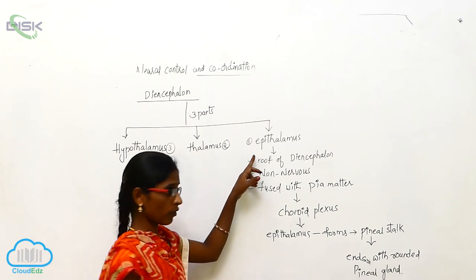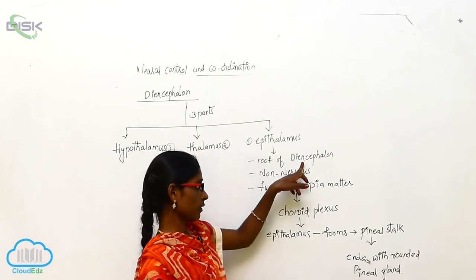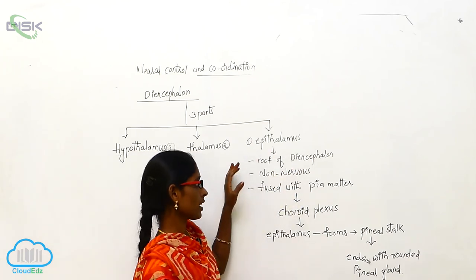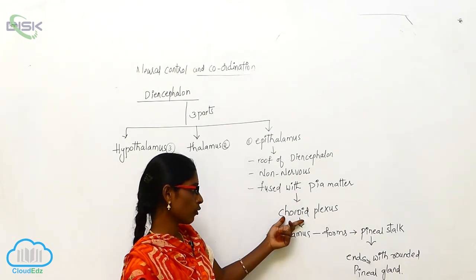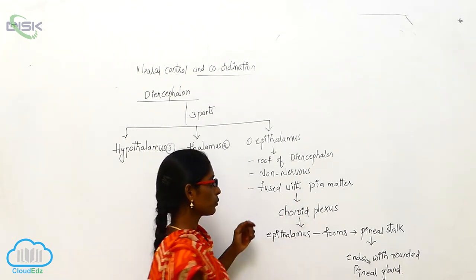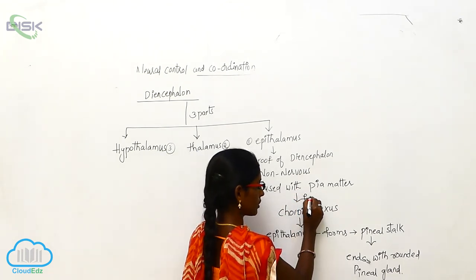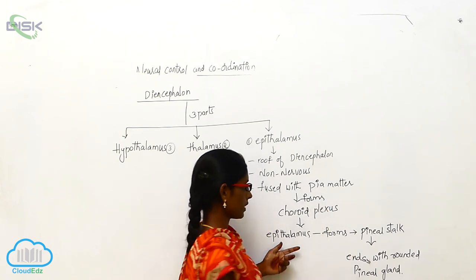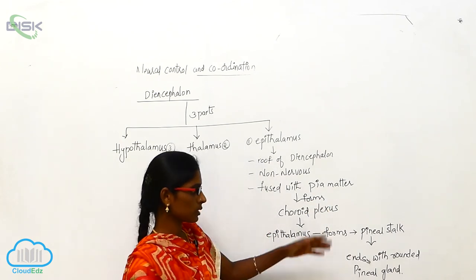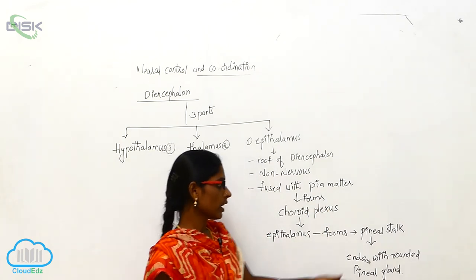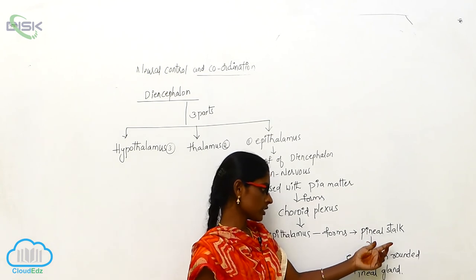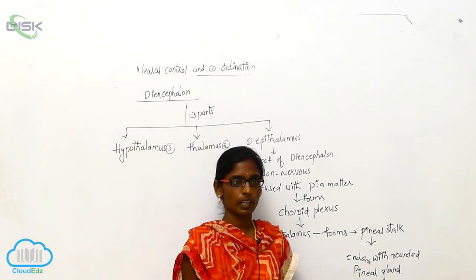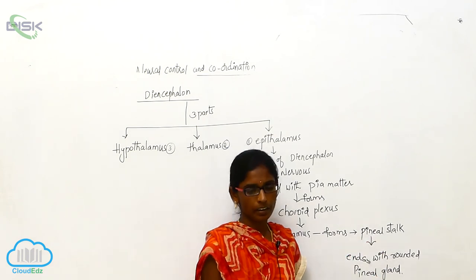The epithalamus is the roof of the diencephalon. It is a non-nervous part fused with the pia mater and forms the choroid plexus. The epithalamus forms a pineal stalk, which continues and ends with a rounded pineal gland.